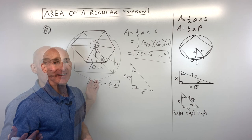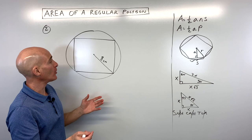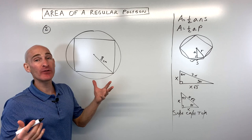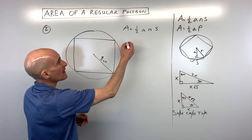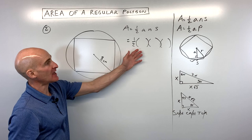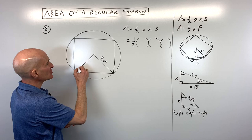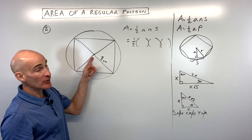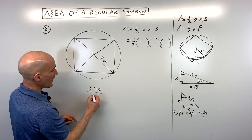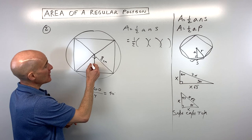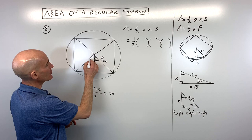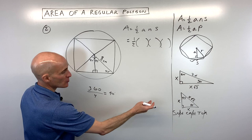Example two: we have a square — a regular quadrilateral inscribed inside a circle with radius 8 centimeters. Writing our formula, area equals one-half A times N times S. Dividing the square into congruent triangles, the central angle is 360 divided by 4, which is 90 degrees. Dropping the altitude bisects that angle, giving 45 degrees on each side — so this is a 45-45-90 special right triangle.